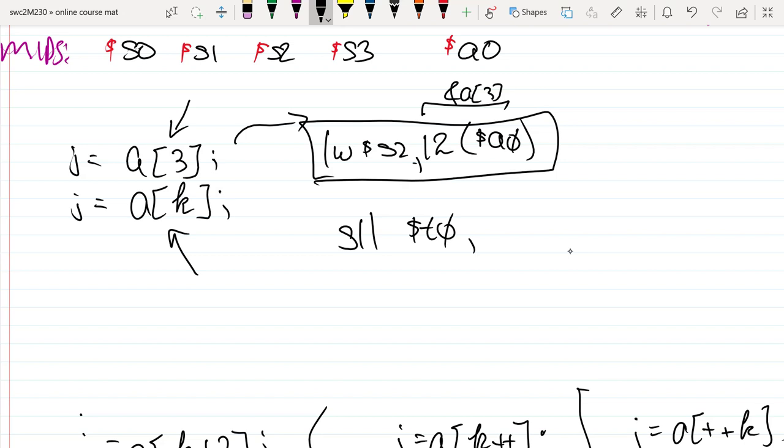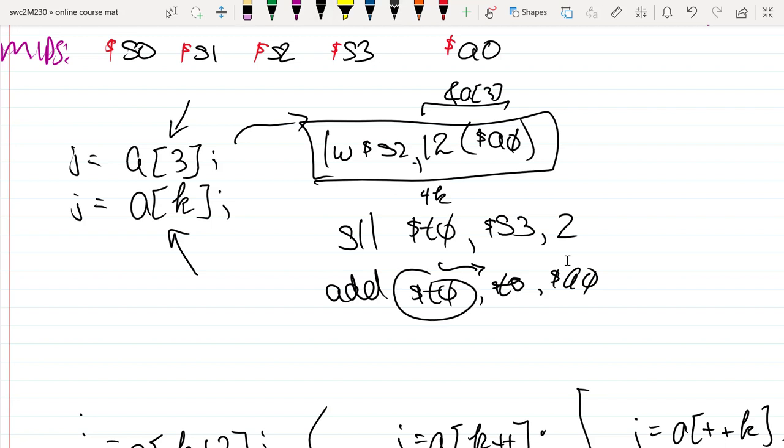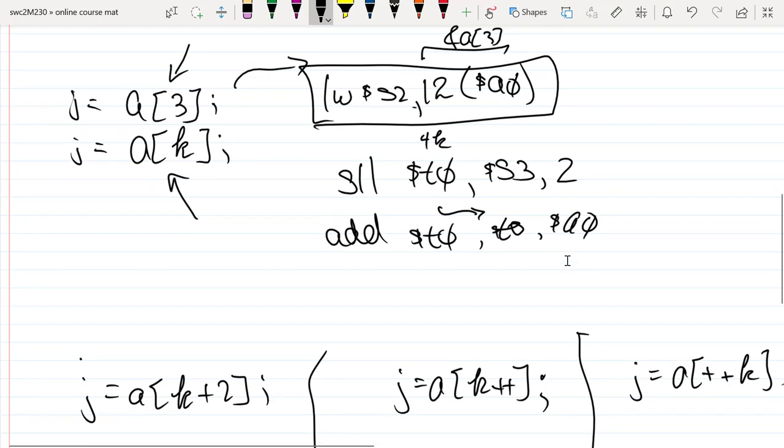So now what we have is 4k inside of t sub 0, and I'm going to add that value to the beginning of the array and then store it here inside of t0. So now at this point t0 has the address of the beginning of the array and the offset of a sub k. So t sub 0 has the final value of a sub k. T0 holds the address of a sub k.